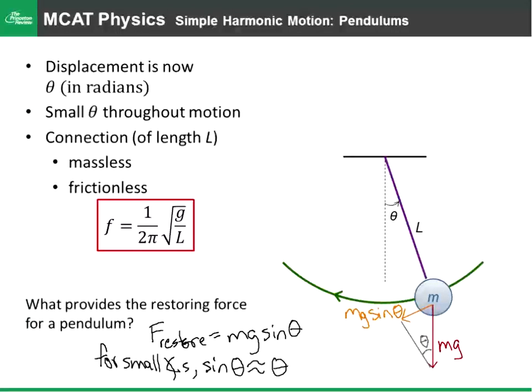So like the sine of 0.1 radians is basically equal to 0.1. And so thus we have the approximation that the restoring force is equal to mg θ, and that gives us our condition that the force is proportional to the displacement.